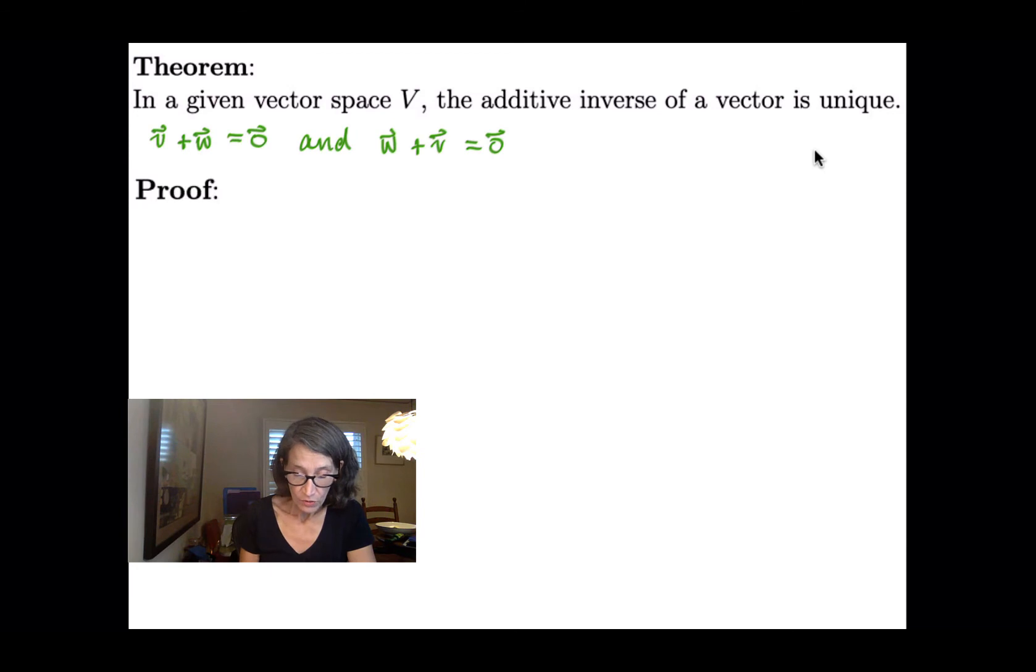All right. So the proof that we're going to do is called proof by contradiction. So in a proof by contradiction, you assume the opposite of what you're trying to prove, and then you arrive at some kind of contradiction or some impossibility.